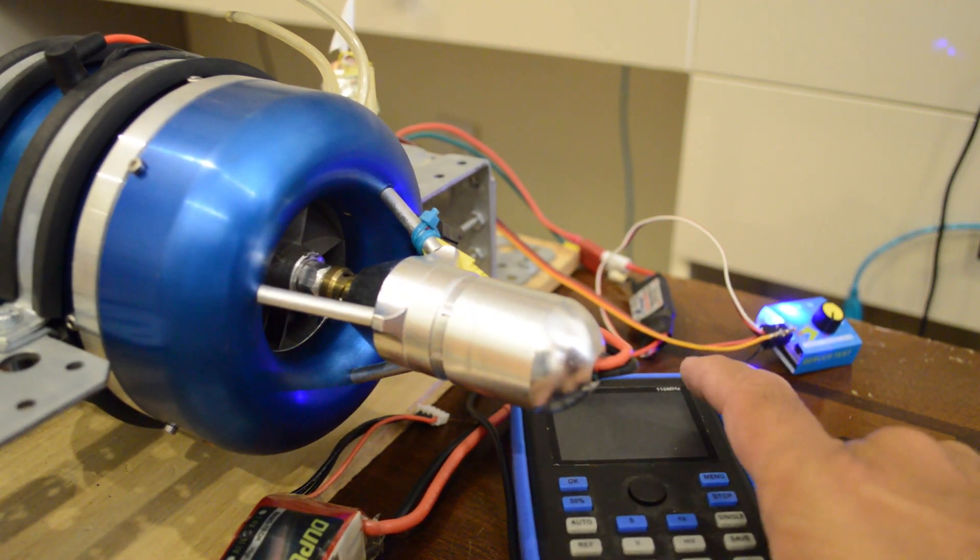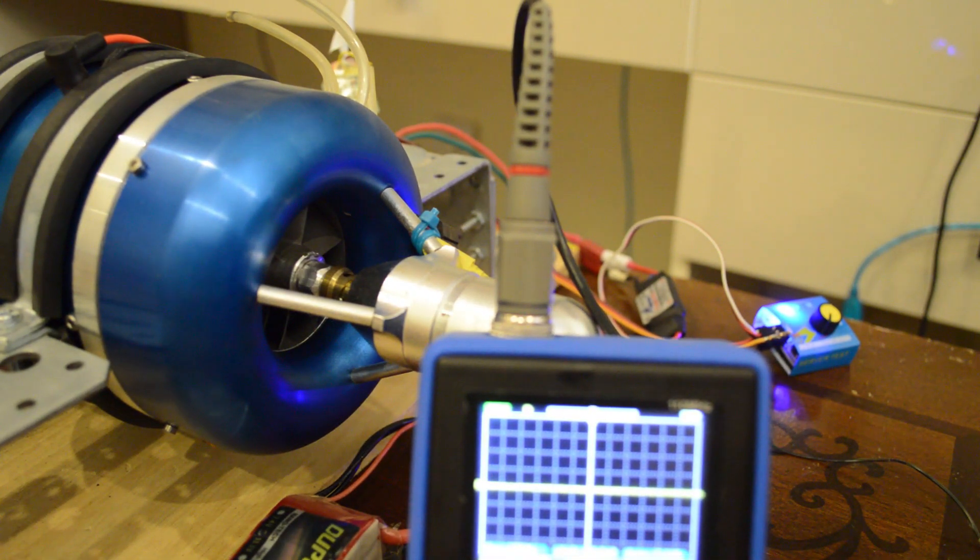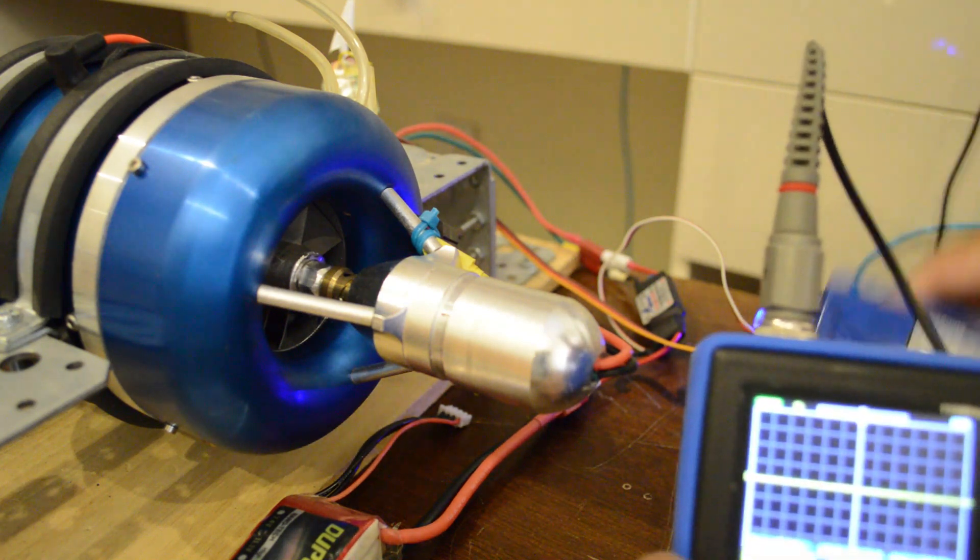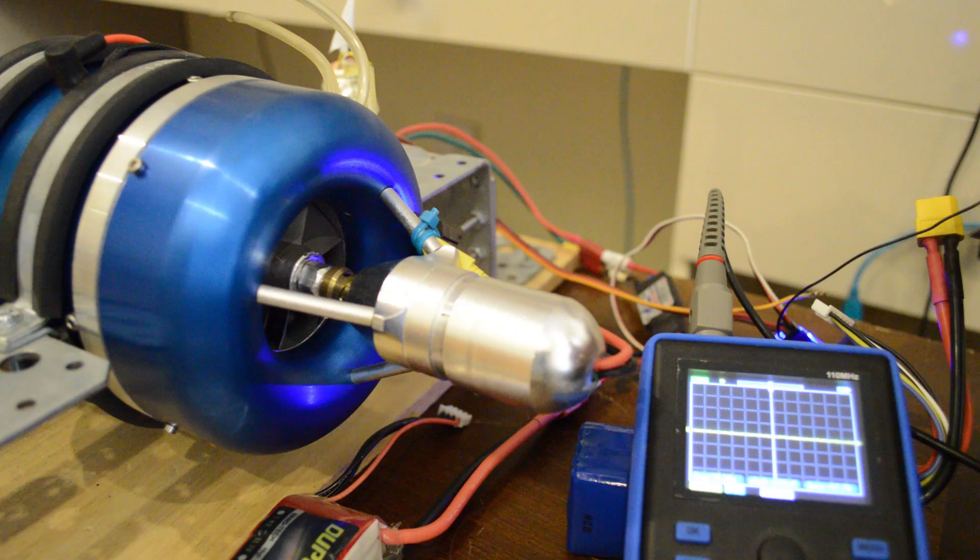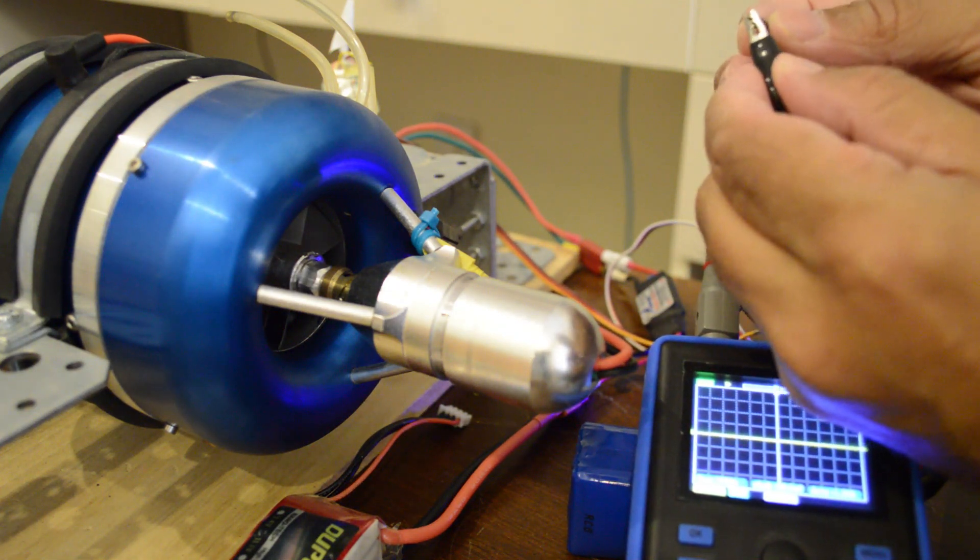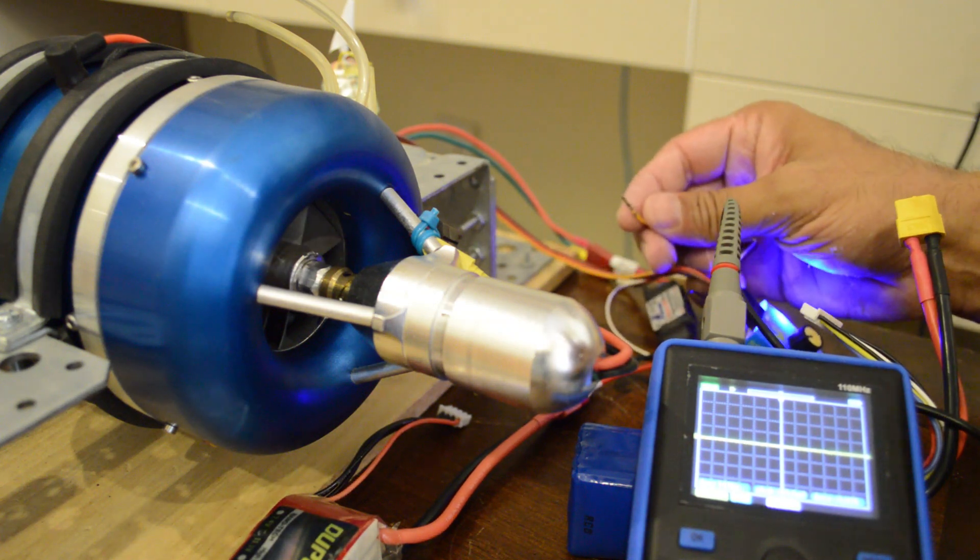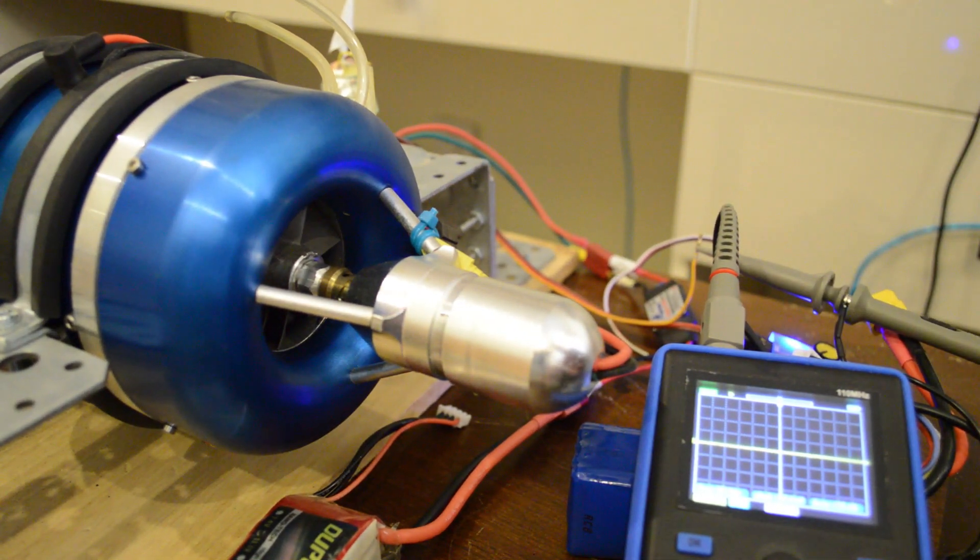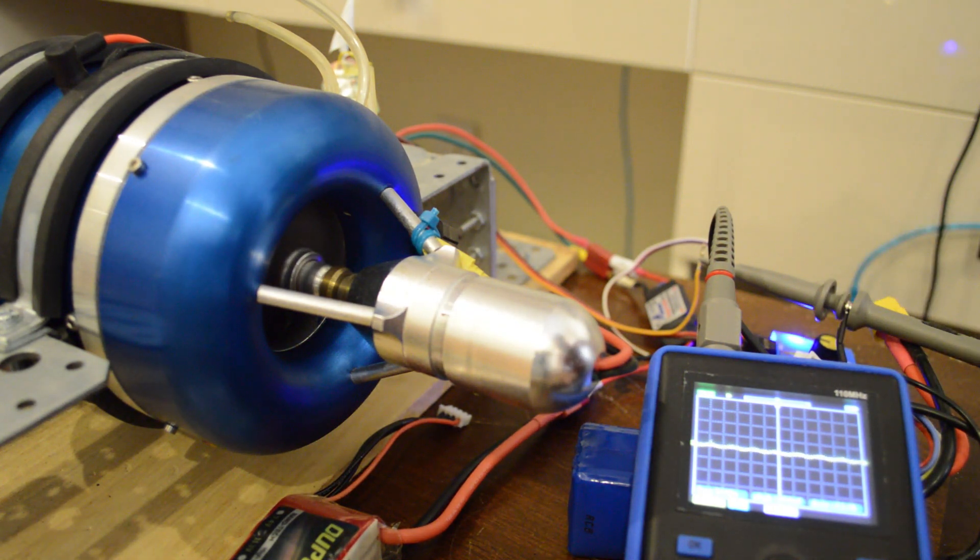We are powering up the hall sensor directly from the servo controller. It is generally providing 5V, that is what we will keep it at. And here is our digital oscilloscope to check the signal from the hall sensor. Connecting ground to the ground of the oscilloscope. And now connecting the signal pin from the hall sensor to the sensor pin of the oscilloscope.